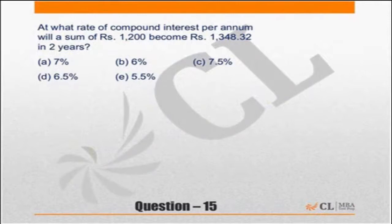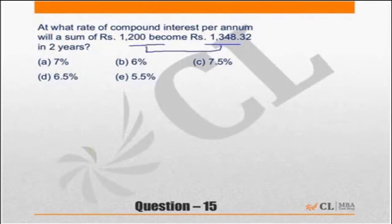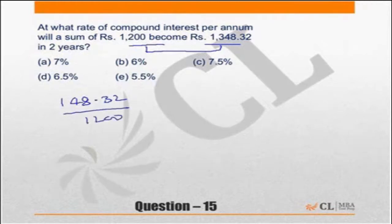At what rate of compound interest per annum will a principal become 1348.12 in 2 years? Looking at the interest, the interest is 148.32 — in other words, 148.32 is the interest (CI), and the principal is 1200 rupees, which gives approximately 12 percent.